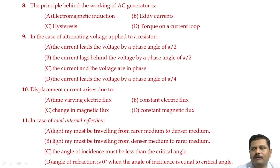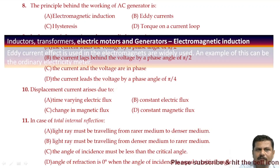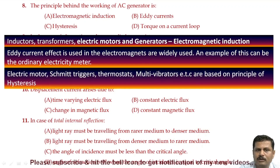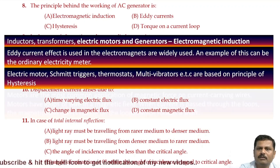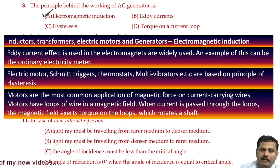The principle behind the working of an AC generator is electromagnetic induction, eddy current, hysteresis, or torque on a current loop. Inductors, transformers, electric motors, and generators all work on the principle of electromagnetic induction. The eddy current effect is used in electricity meters. Hysteresis is used in electric motors, Schmitt triggers, thermostats, and multivibrators. Torque on a current loop is used in motors. For this question, option A is the right answer — the AC generator works on the principle of electromagnetic induction.